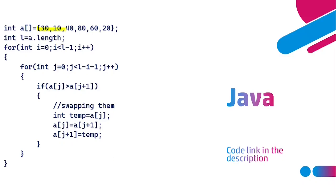Now let's look at the coding part. We have an unsorted array and the length is stored in variable l. Two nested for loops are needed. The outer loop is initialized with i equals zero and the terminating condition is i less than l minus one. For four elements, the outer loop runs l minus one times. The updation statement is i plus plus.